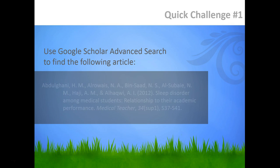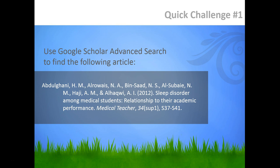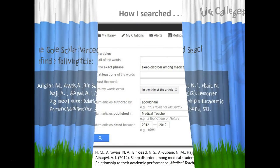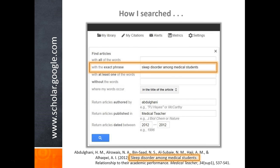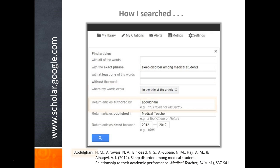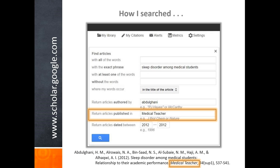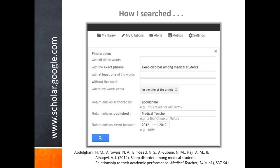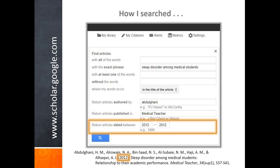Let's try out using the advanced search. See if you can locate the following article in Google Scholar using advanced search. Pause this tutorial to perform the search. Here's how I searched: I put the first part of the title into the exact phrase search box and told Google to search for those words only in the titles of articles. I input the first author's last name into the author box. I knew which journal it was published in, so I typed Medical Teacher into the publisher box. Finally, I knew it was published in 2012, so I limited my results to only return results published in 2012. When I searched, this article was my only result.